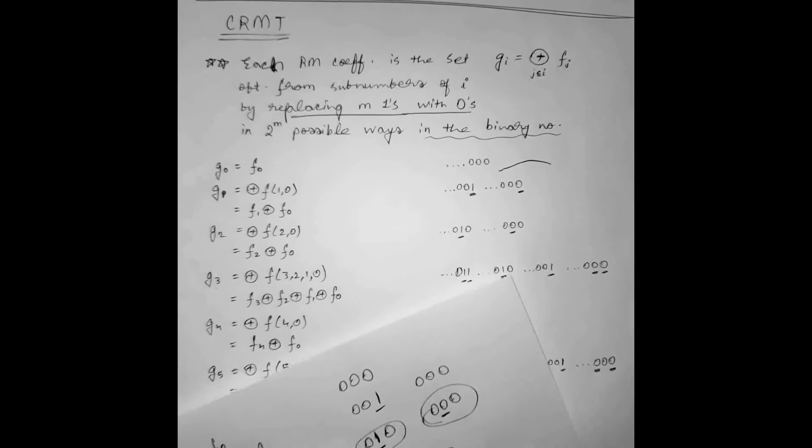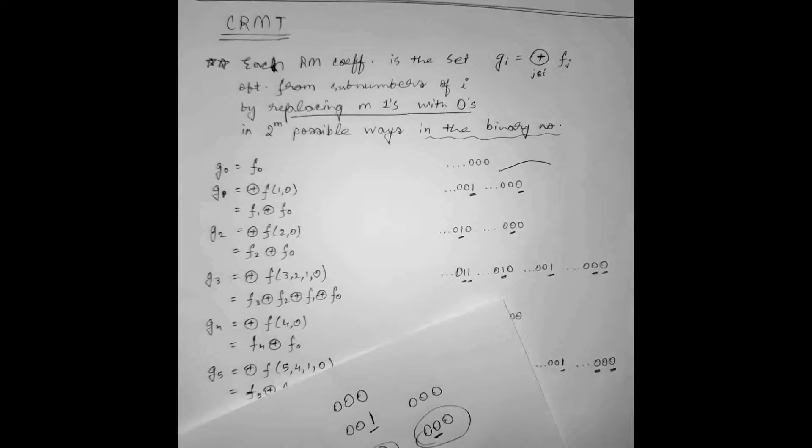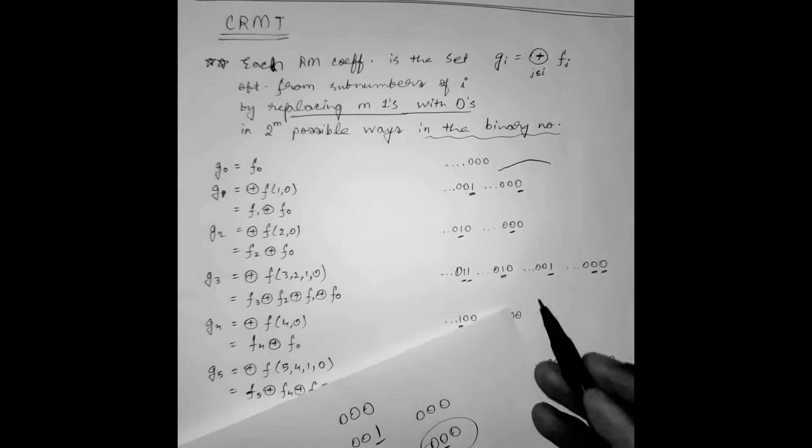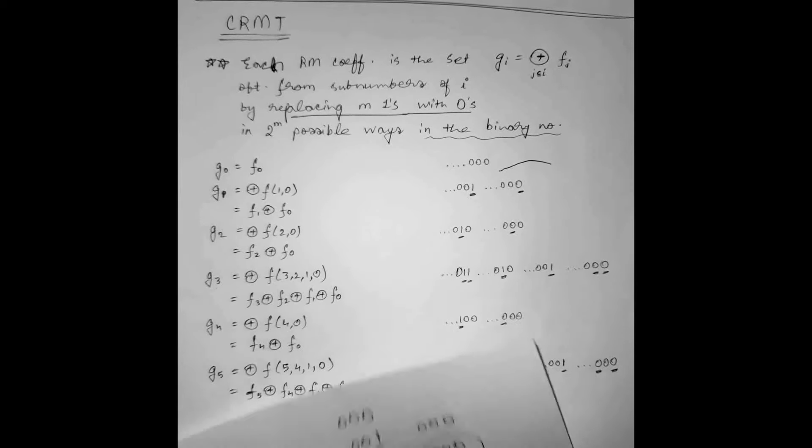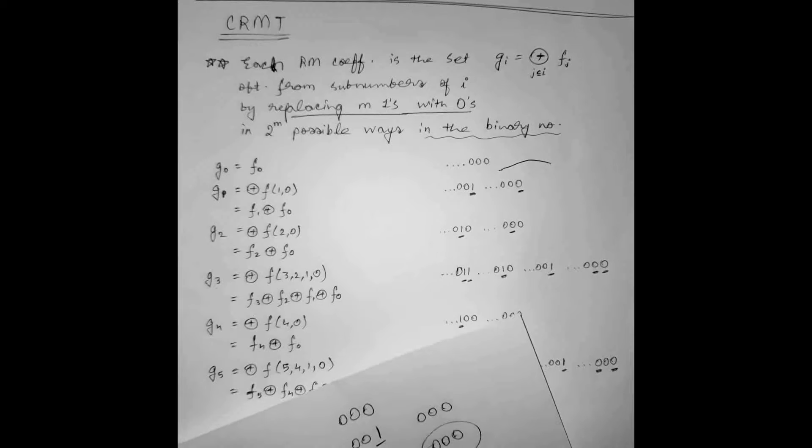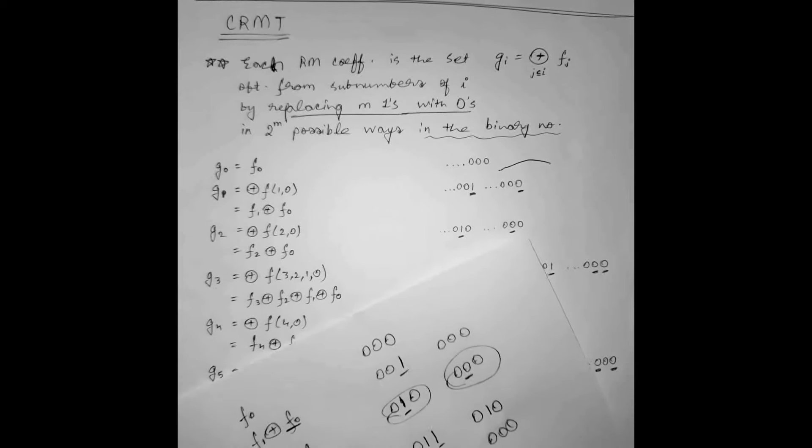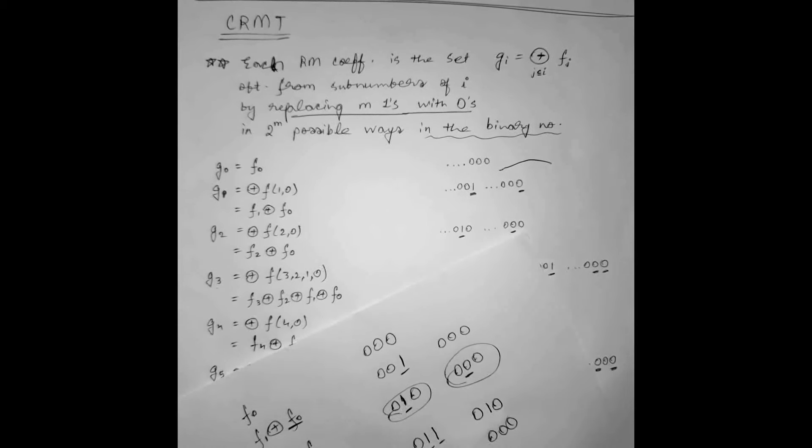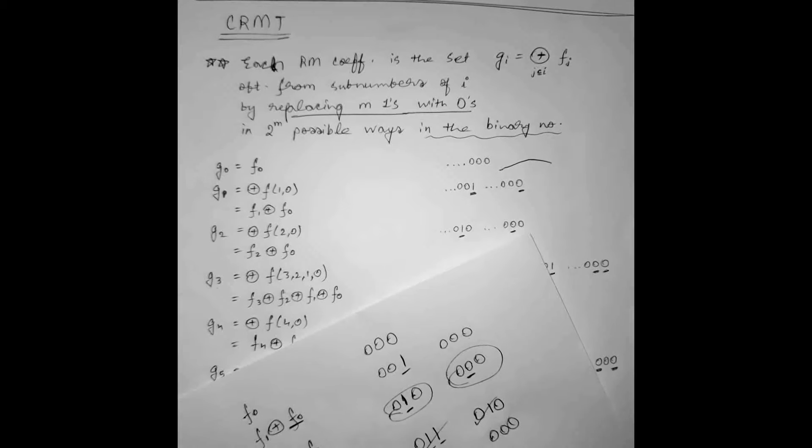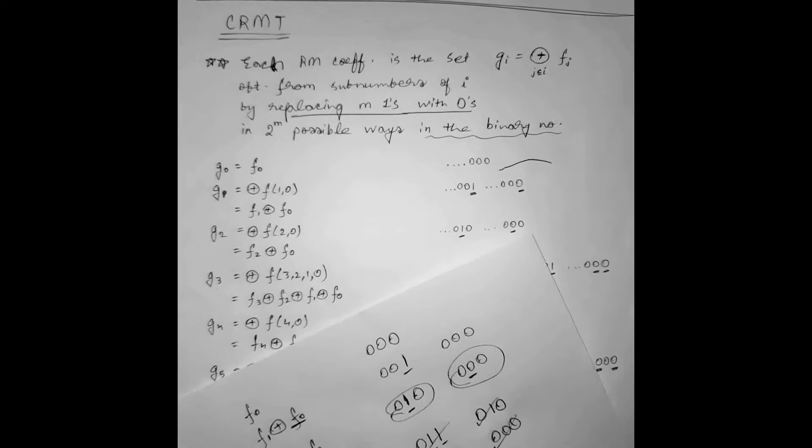So 0, 1, 1. One term can be 0, 1, 0. You can see. Then second 0, 0, 1. Now this term we are replacing. And then fourth term 0, 0, 0. So that's why F3, F2, XOR F1, XOR F0.